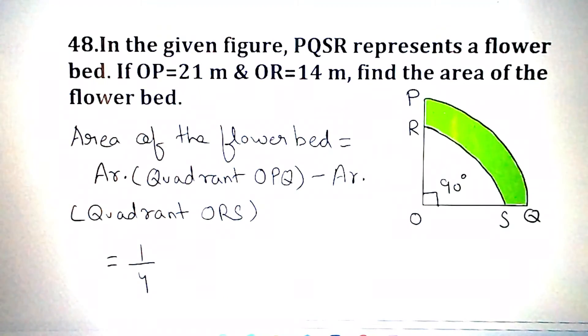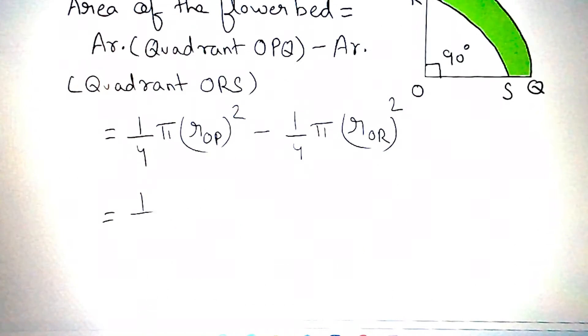That is, 1 by 4 pi into radius OP whole square minus 1 by 4 pi into radius OR whole square. 1 by 4 pi, that is 22 by 7, into radius OP, that is 21 into 21, minus 1 by 4 into 22 by 7 into 14 into 14.